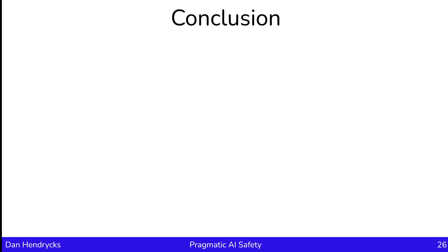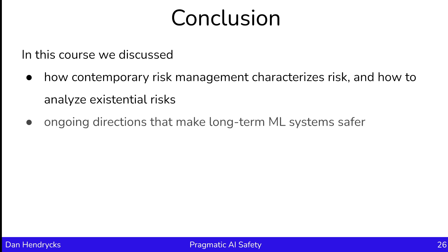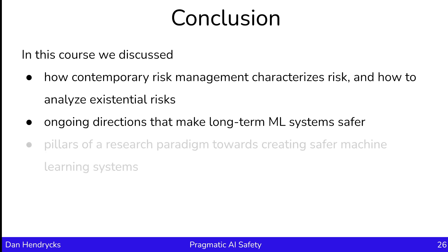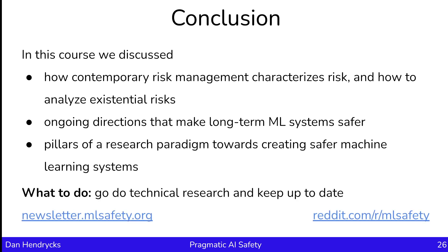In closing, in this course we discussed how contemporary risk management can be used to characterize risk and analyze existential risks. We discussed how ongoing research directions can help make machine learning systems safer, and we discussed some pillars of a pragmatic research paradigm toward creating safer ML systems. What's left to do is for you to go do technical research and keep up to date. Thank you.